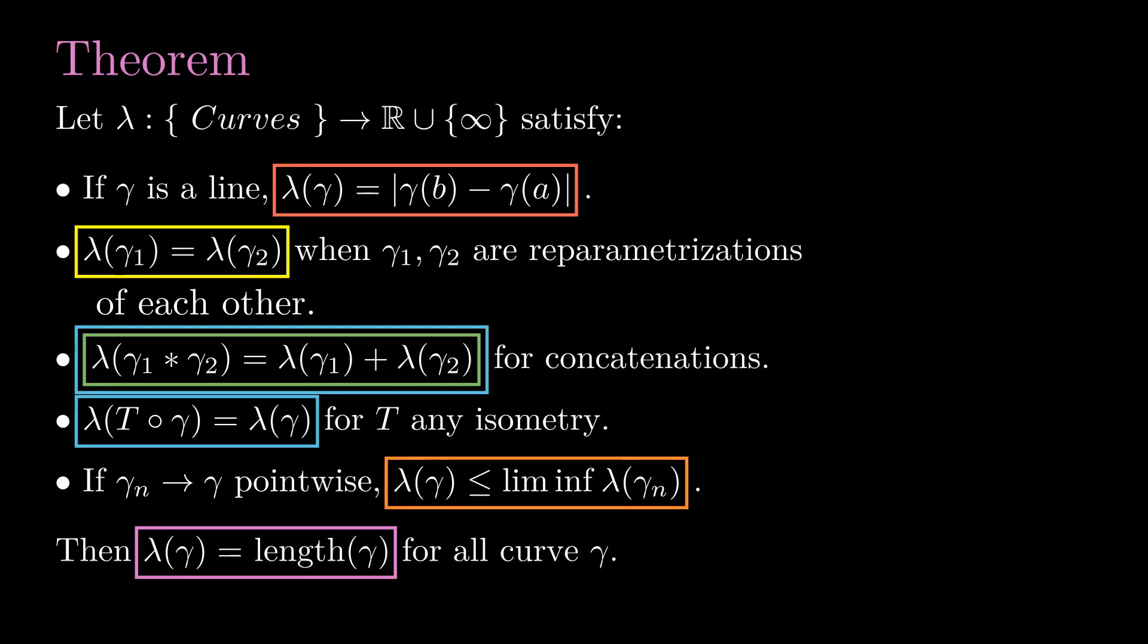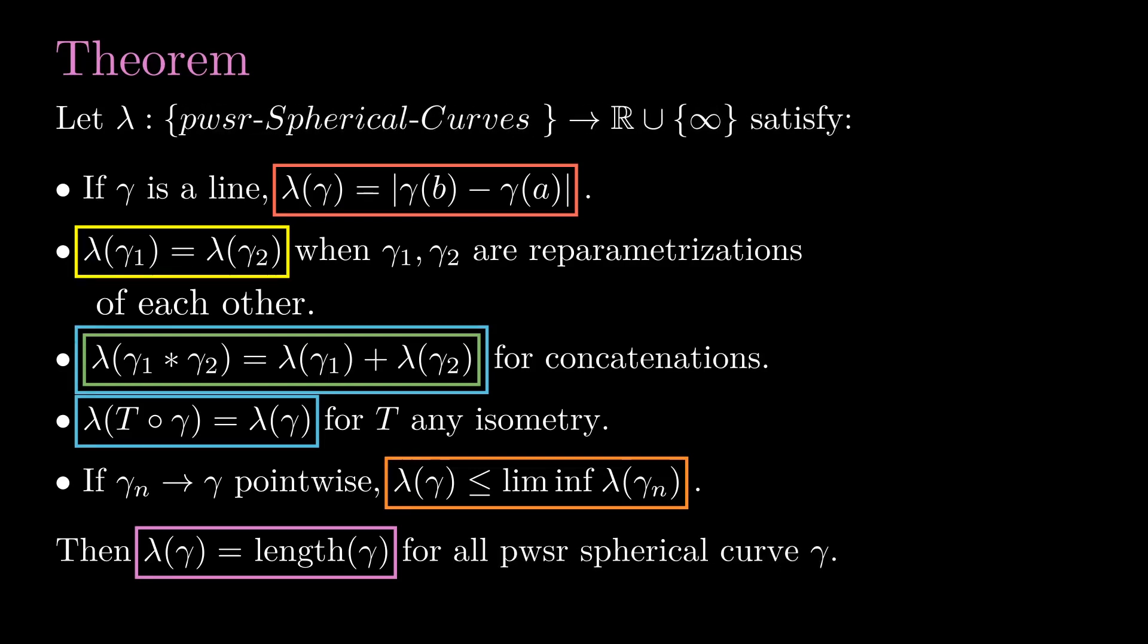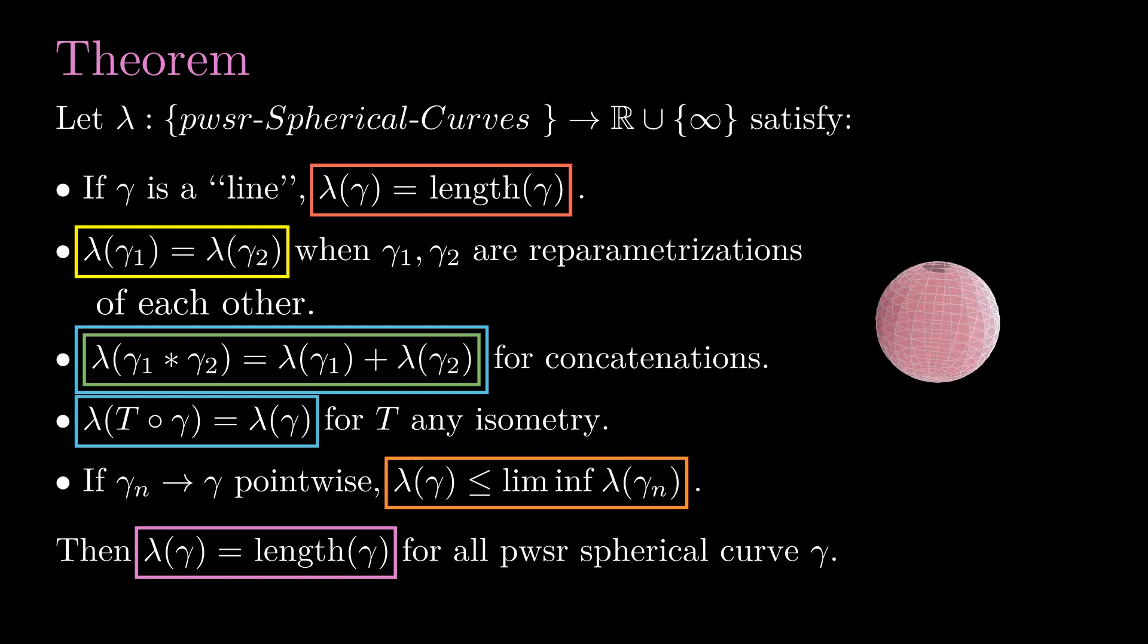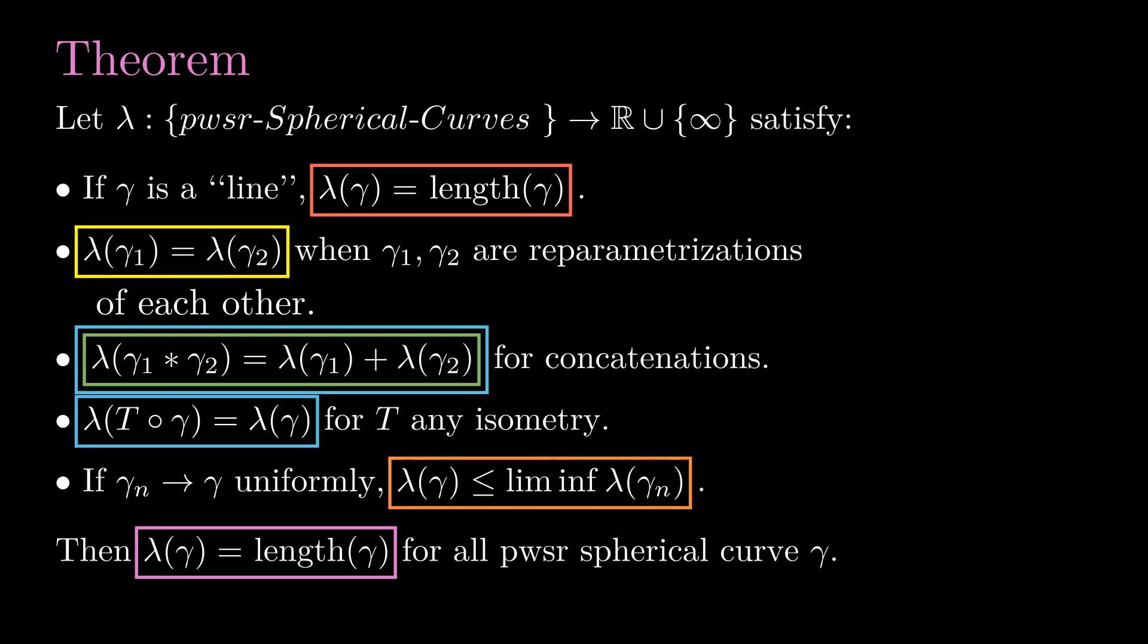We will prove this Crofton formula using the theorem that characterizes the length functional. Since we are working in a smaller class of curves, we need to modify our theorem to be about piecewise smooth regular curves. Of course, we need to modify the clause about straight lines, as straight lines are not spherical curves. In the setting of spherical curves, the ones that play the role of straight lines are the segments of great circles, which are the intersections of the unit sphere with a plane passing through the origin. Now to prove our new Crofton formula, we need to replace the pointwise convergence by uniform convergence. I'll leave it to you to verify that this theorem remains true after the changes we made. The proof is exactly the same as the one we presented in the second lesson.